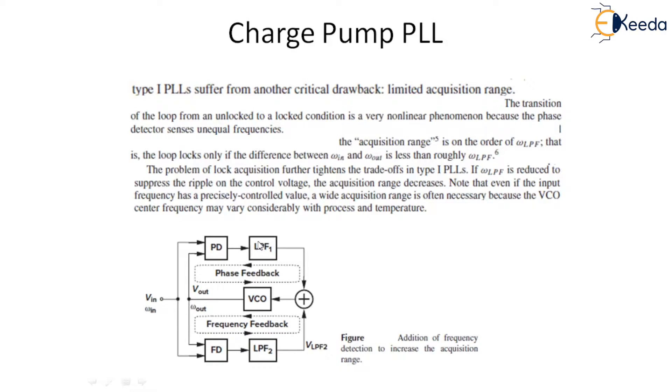And this problem of lock acquisition further tightens the trade-off in type 1 PLL. If W LPF is reduced to suppress the ripples on the control voltage, the acquisition range decreases. Note that, even if the input frequency has a precisely controlled value, a wide acquisition range is often necessary because the VCO center frequency may vary considerably with process and temperature.